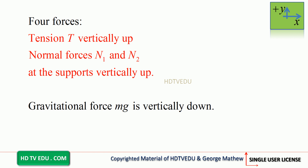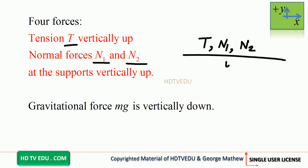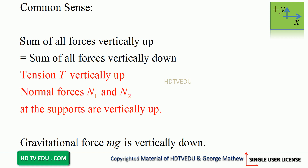Four forces act on the gate: tension T vertically up, normal forces N1 and N2 vertically up, and gravitational force vertically down. So we have T, N1, and N2 all acting vertically up.